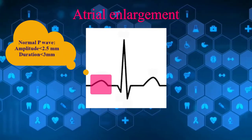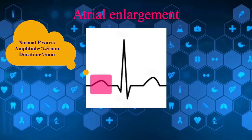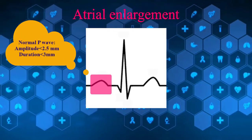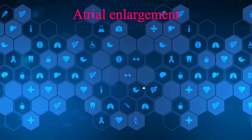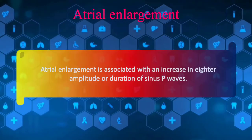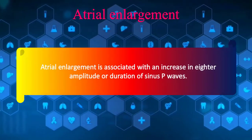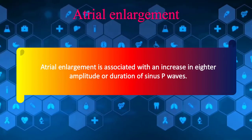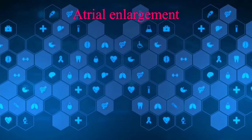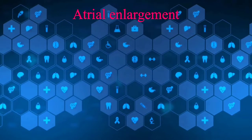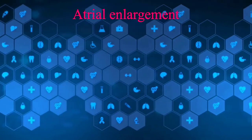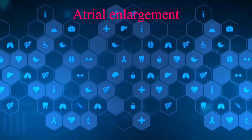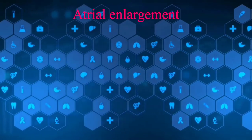The amplitude and duration of sinus P waves are normally less than 2.5 and 3 small boxes respectively. Atrial enlargement is associated with an increase in amplitude or duration of sinus P waves. Like many cardiac abnormalities, several electrocardiographic criteria for diagnosing right and left atrial abnormalities are defined.